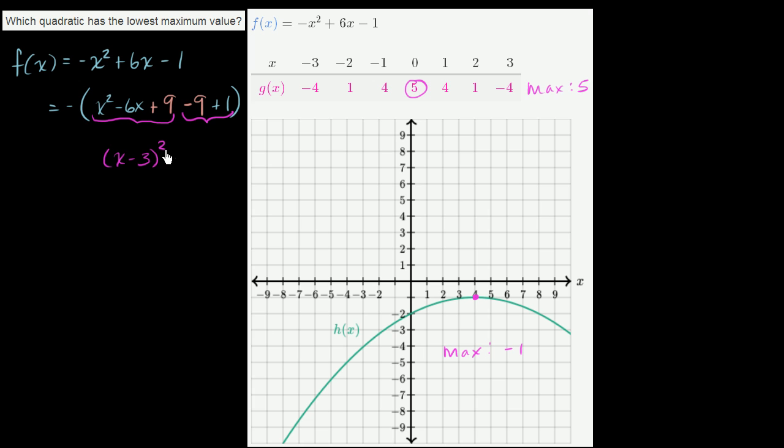So this part right here is -8. And we still have the negative out front. So we can rewrite this as, if we distribute the negative sign, -(x - 3)² + 8.